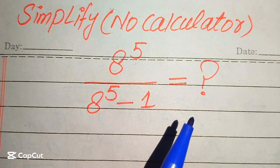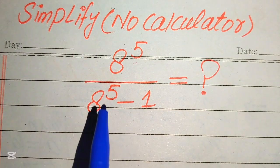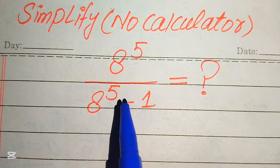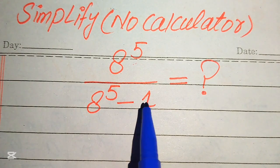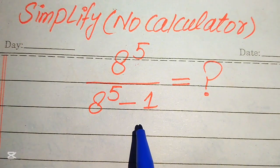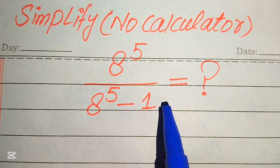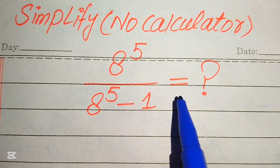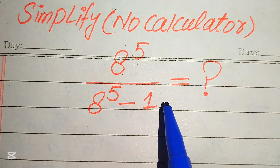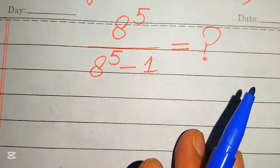Hello everyone, today I want to show you how to simplify this algebraic expression: 8 to the power of 5 divided by 8 to the power of 5 minus 1. If you have any other method in mind, please don't hesitate to write it in the comment section.